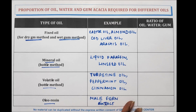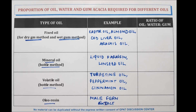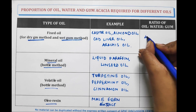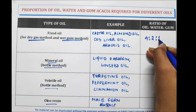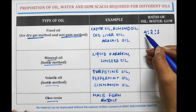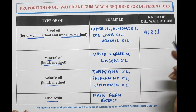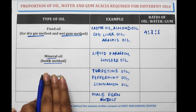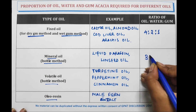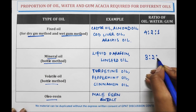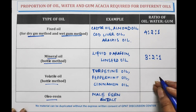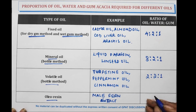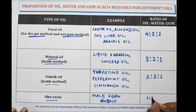These were the examples of oil. Now, the ratio of oil, water, and gum for fixed oil is 4:2:1, meaning 4 parts of oil, 2 parts of water, and 1 part of gum. For mineral oil, the ratio is 3:2:1. Volatile oil has a ratio of 2:2:1, and oleurizing has a ratio of 1:2:1.